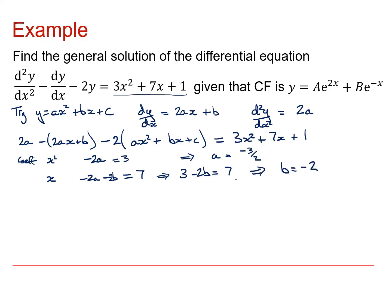And if we now look at the constant terms, I'm going to get 2a minus b from the middle bit and minus 2c from the last bit, and that's got to be equal to 1. And again I already know that a is -3/2 and b is -2, so I'm going to get -3 plus 2 minus 2c equals 1. Well this gives me -2c equals 2, so that gives me c equals -1. So my particular integral is going to be y equals -3/2 x² - 2x - 1.